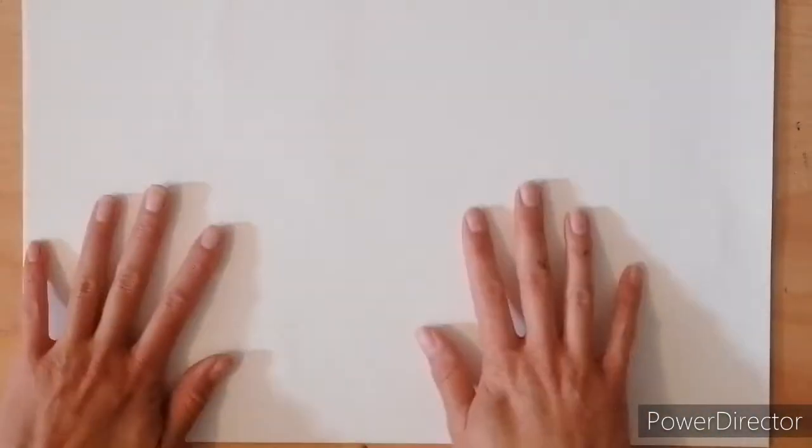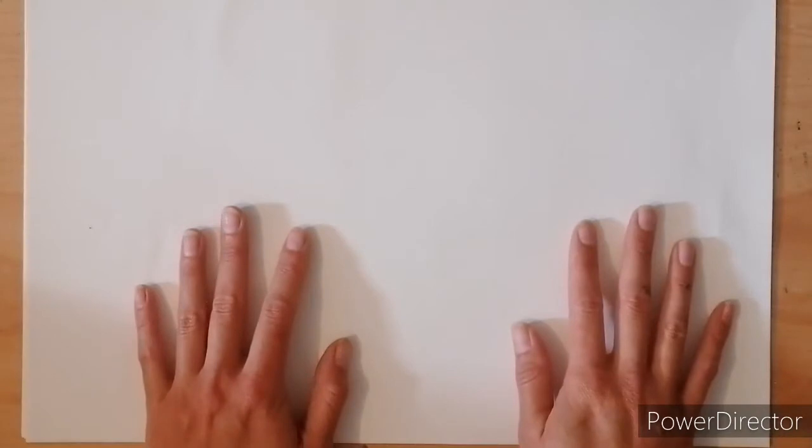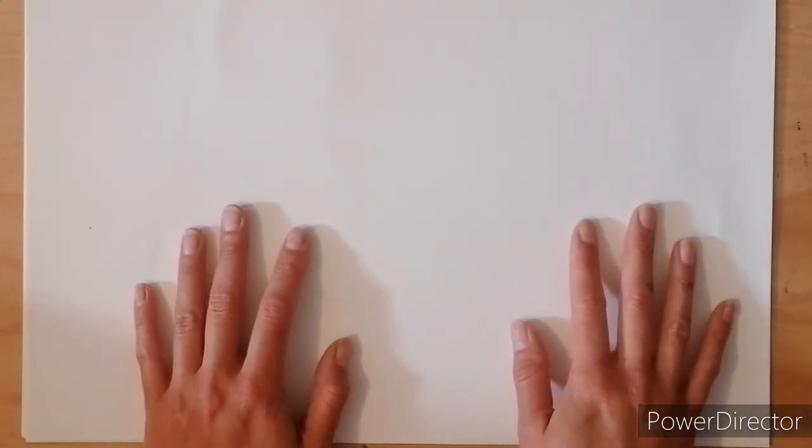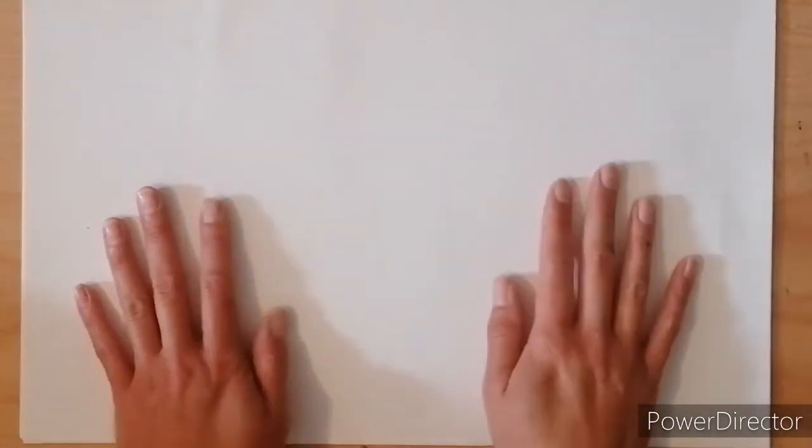For today's art project we're only going to need three things. First thing we're going to need is something to paint on. Today I've just got some plain white paper. It's quite smooth, it's quite thick, a bit thicker than normal printer paper. But if that's all you've got, just some plain A4 paper or a canvas, board or card, this technique will work on a number of surfaces and it's always fun to experiment.